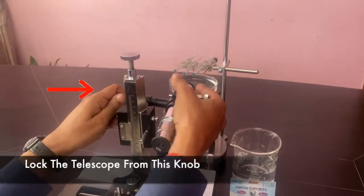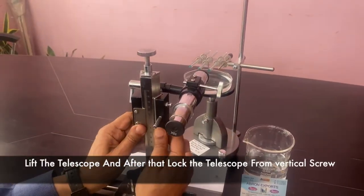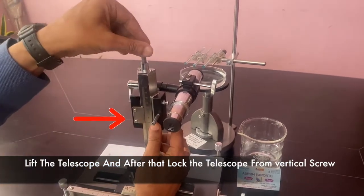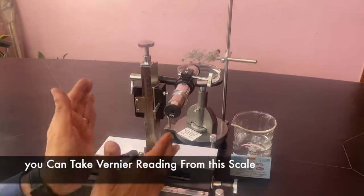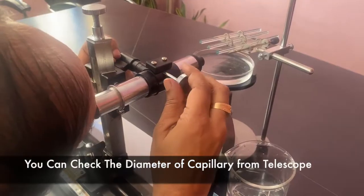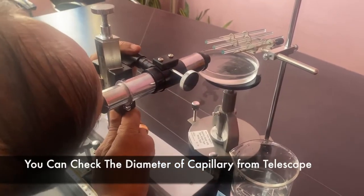Lock the telescope from this knob. Lift the telescope and after that lock the telescope from the vertical screw. You can take vernier reading from this scale. You can check the diameter of the capillary from the telescope.